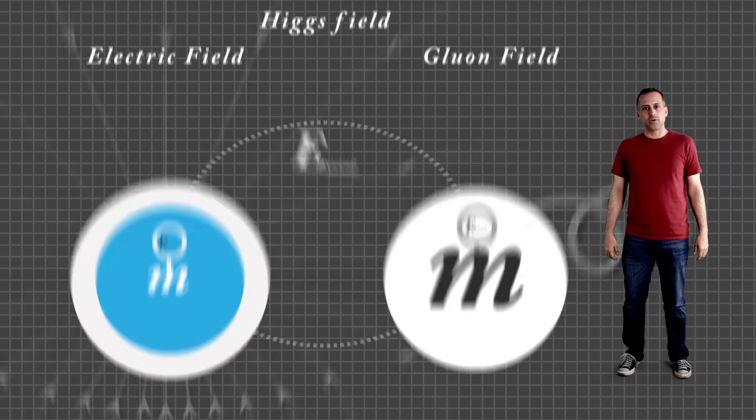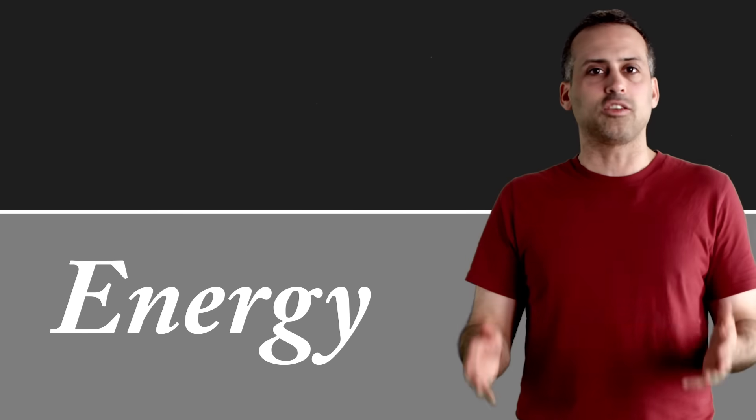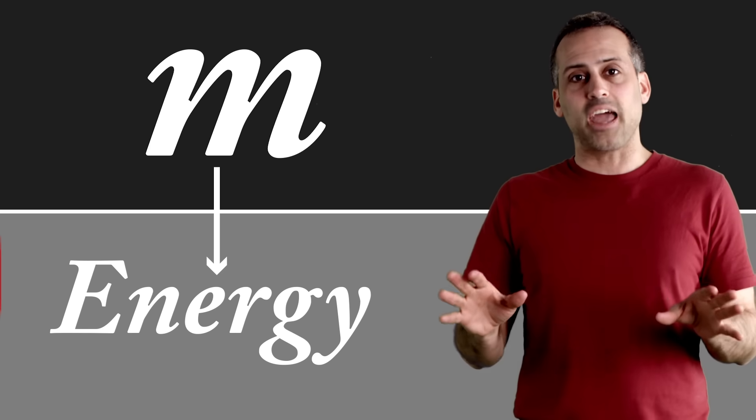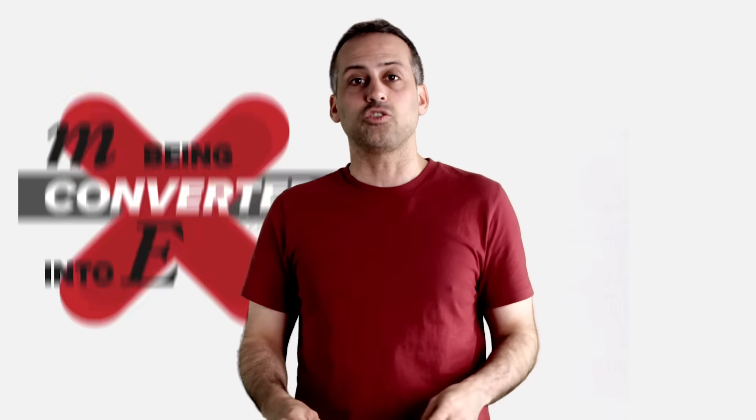OK. What about matter-antimatter annihilation? Doesn't that have to be thought of as mass being converted into energy? Interestingly, no. There's a way to conceptualize even this process as simpler conversions of one kind of energy to another, kinetic, potential, light, and so forth. You never need mass to energy alchemy. But please take my word for it. You don't actually have to talk about converting mass to energy ever.